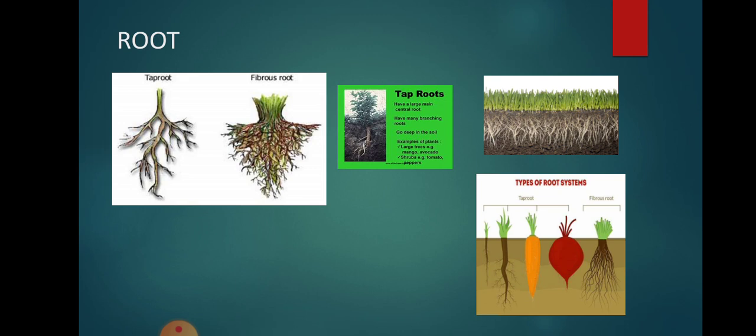Tap root: it consists of one main thick root from which small roots grow. Plants such as bean, mustard, and hibiscus have tap root. Fibrous root: it consists of many thin roots that appear bushy. There is no main root. Plants such as grass, wheat, and onion have fibrous root.